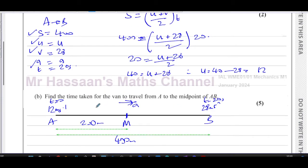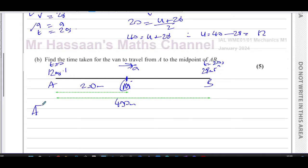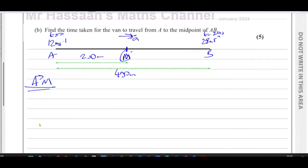So we want to find the time it takes for it to travel until it reaches M. Let's consider A to M first and see if we need anything from elsewhere. From A to M we have the following information: S is displacement which is 200 meters, U is 12, V we don't know the velocity at M, A we don't know the acceleration, but we know it's constant, and T we don't know the time either.